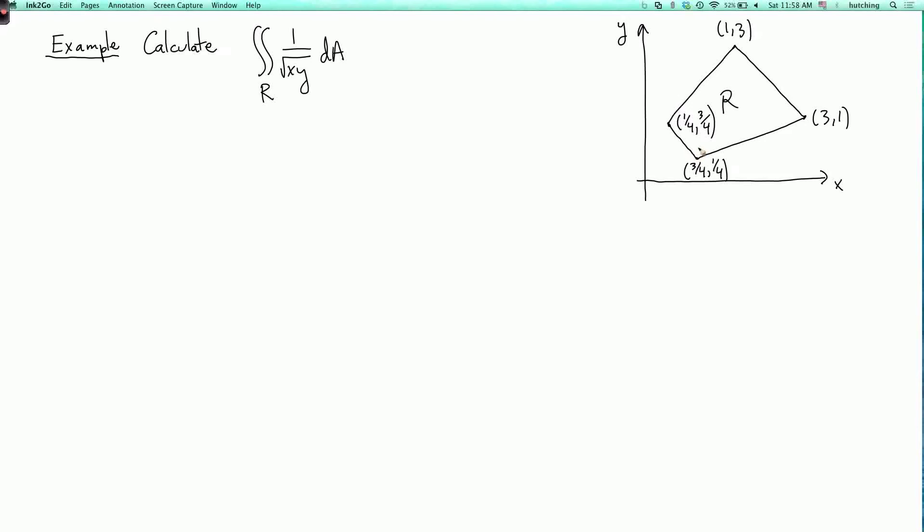Where r is the quadrilateral whose corners are 3 quarters, 1 quarter, then 3, 1, then 1, 3, and 1 quarter, 3 quarters.